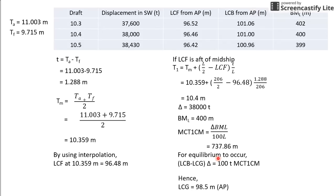Last but not least, for equilibrium to occur: (LCB - LCG) × Displacement = 100 × t × MCT1cm. Substitute all the values you have obtained, and you'll get your LCG to be 98.5 meters.